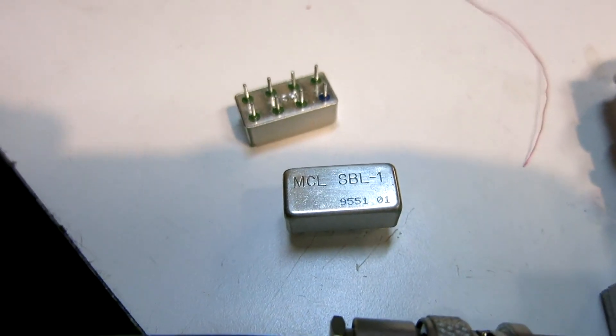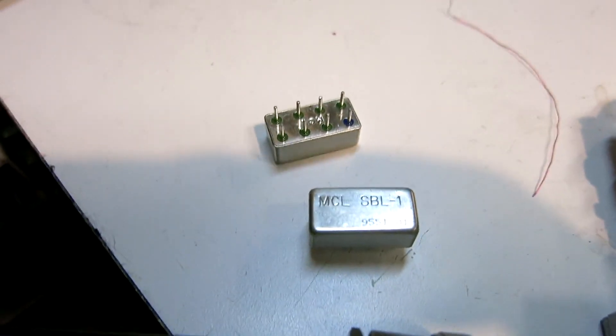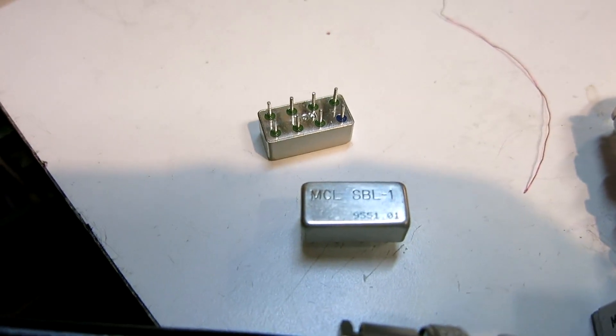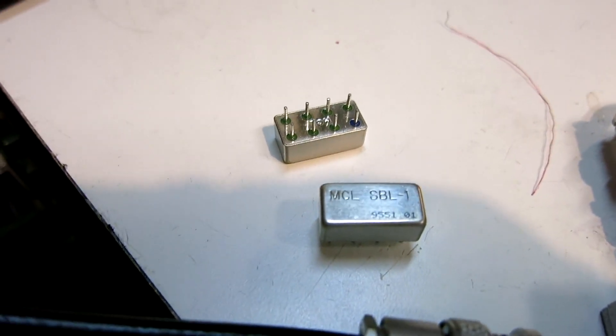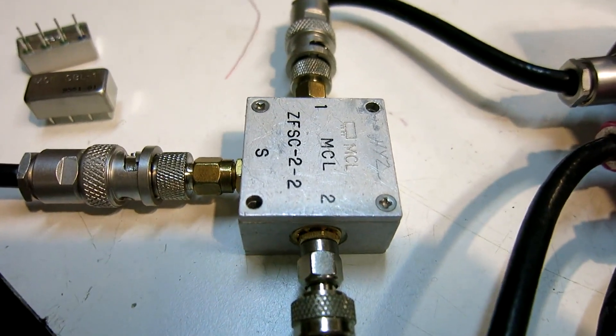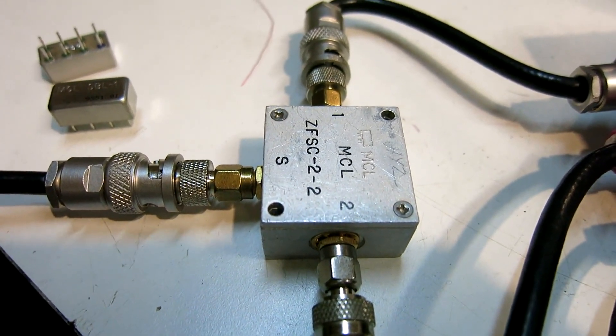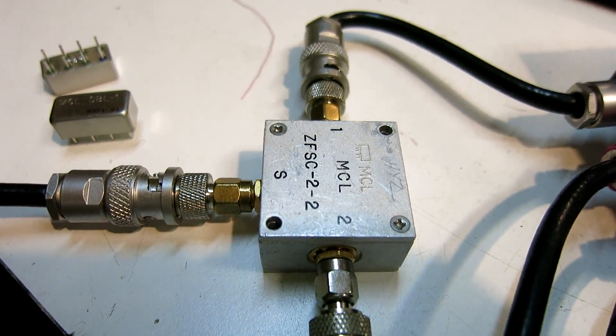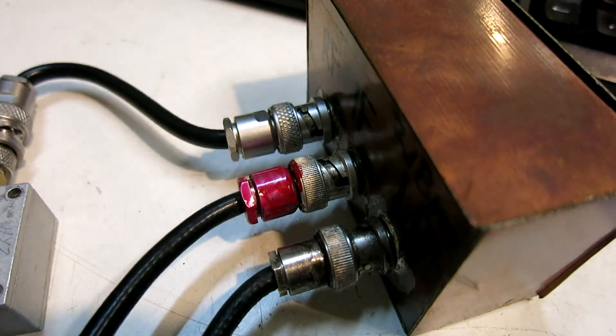We can use Schottky diode mixers, like these ones from Mini Circuits, as frequency doublers. I have a setup here with a power splitter, 3 dB splitter, 0 degrees, into a box wherein I have one of these mixers.